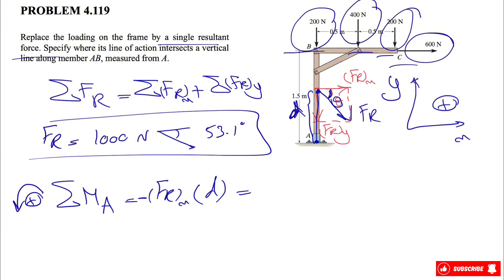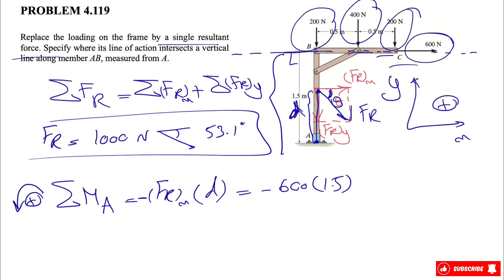I'm using the 2D shortcut for finding moments in 2D problems — I'll put the link in the description. All our forces are in the x and y direction. We look for the perpendicular distance from the point we're taking the moment about — which is A — to the line of action of the force. For the 600 N force, that perpendicular distance is 1.5 m. The moment of 600 is clockwise, so negative, at distance 1.5.